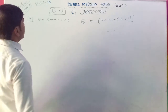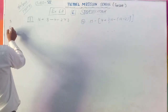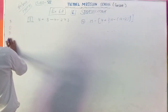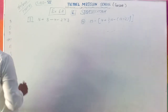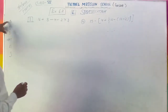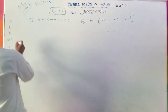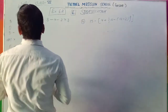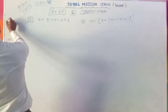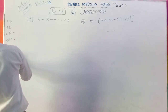Which one do you do first? I write here: B, O, D, M, A, S. Bracket is not given. Off is not given. Division is given. So first, division is given. The numbers given are: first, second, third, fourth, eighth, sixth.